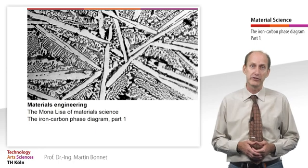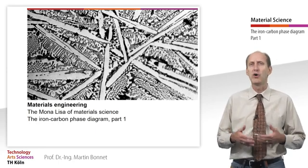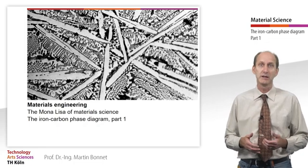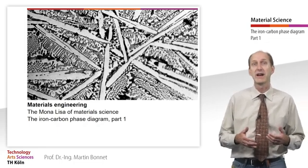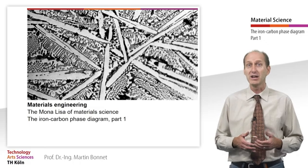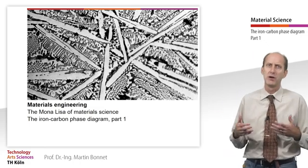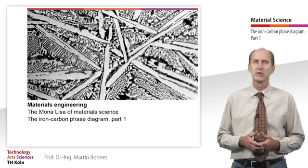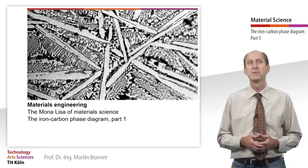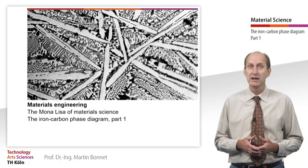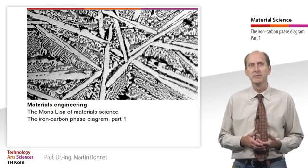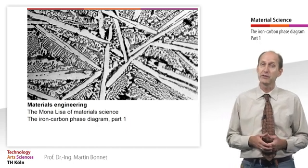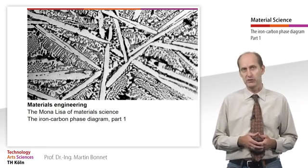The iron-carbon binary system forms the basis for all steels and cast iron materials. The mechanical properties of steel and cast iron materials can be changed in vast ranges of different degrees of strength. This is closely related to the transformation behavior of the iron lattice and the specific interactions between carbon and the two crystal structures of iron, namely body-centered cubic and face-centered cubic.